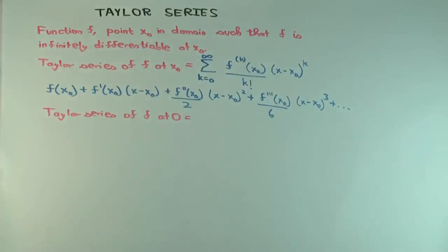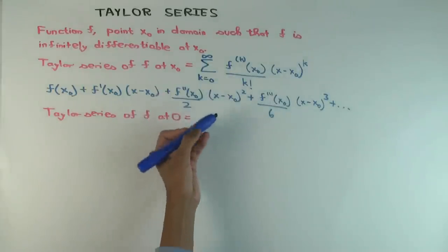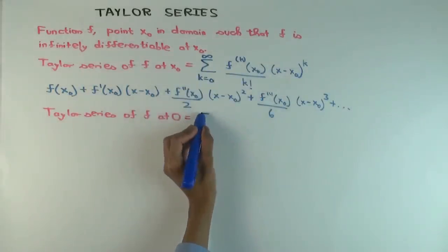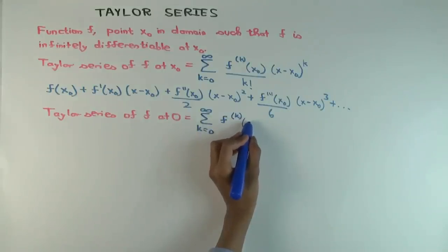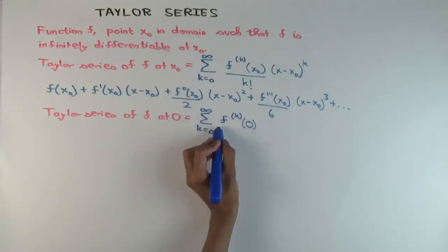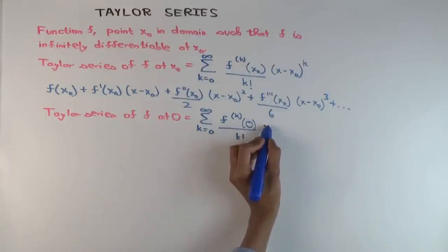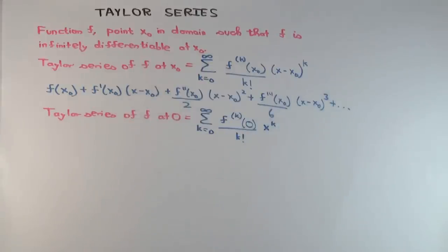Now, a special case, which is the one which we often will restrict our attention to just for simplicity of notation is where x0 is 0. The point about which we are doing the Taylor series is 0. So in that case, what does the expression become? It's just summation k equals 0 to infinity, f kth derivative, not kth power, sorry, f kth derivative at 0 over k factorial times x to the k. So that x minus x0 just becomes x minus 0. So this now is an ordinary power series. It's just sum of powers of x.